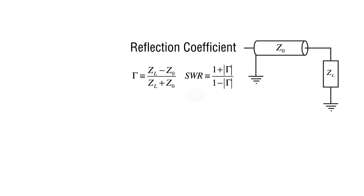Creating a Smith chart begins with the definition of the reflection coefficient, gamma, from transmission line theory. Gamma is defined as the load impedance, Z sub L, minus the transmission line characteristic impedance, Z sub 0, divided by the sum of these two impedances.